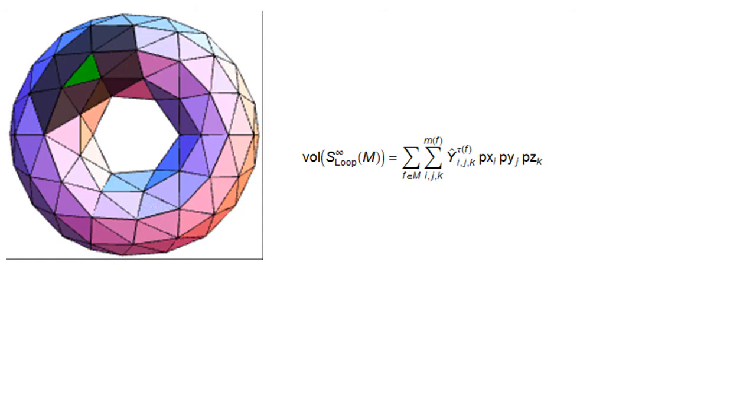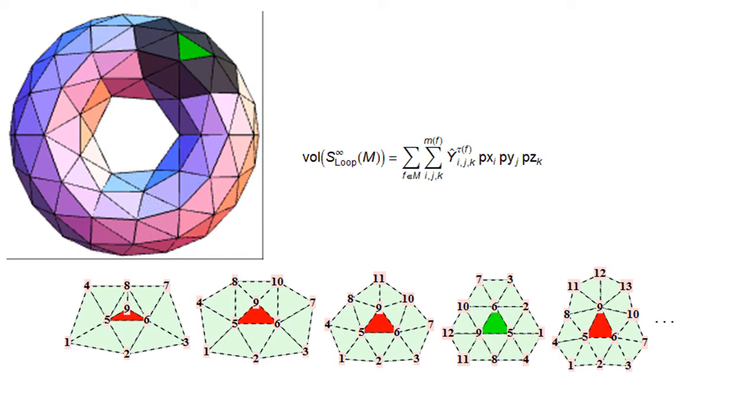Let's recall the volume formula for ordinary loop subdivision surfaces. The volume enclosed by the limit surface is a sum over all triangles in the mesh. The x, y, z coordinates of the points of the one ring of a triangle are made input to a trilinear form. The trilinear form only depends on the topology of the one ring. The type of the one ring is essentially characterized by the valence of the non-regular vertex.